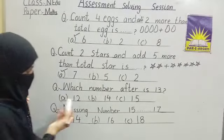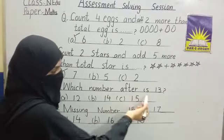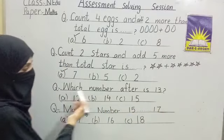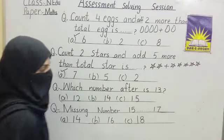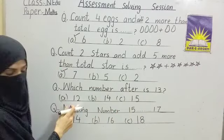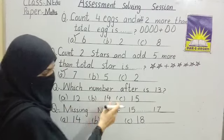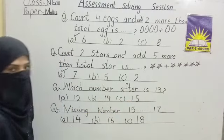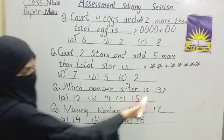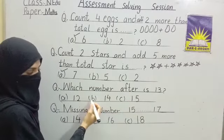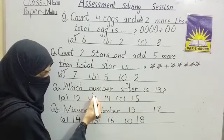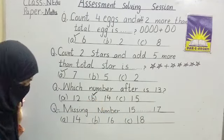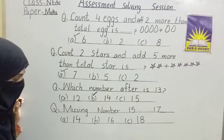Our next question: which number comes after 13? Options are given. The answer is fourteen — tick option A, fourteen.